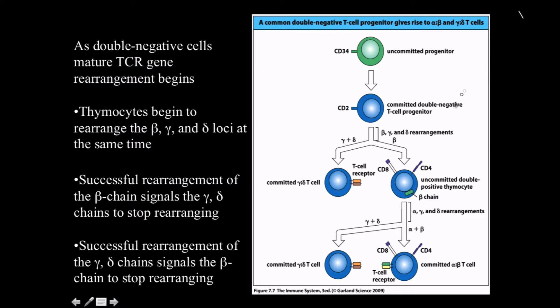This diagram shows a common double negative T cell progenitor. It's CD34 positive, so it's still a stem cell at this point. It's going to give rise to alpha-beta or delta-gamma. Here it's starting to develop into a T cell progenitor, notice the CD2 there. At this point one of two things are going to happen. It's going to essentially have a race of who can rearrange their genes faster, the beta chain or the gamma-delta chain at the same time. Whoever wins first gets to send a signal to shut down the others.